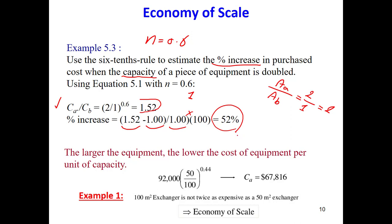The important message of this example is that doubling the capacity does not double the price — it only increases it by about 50 percent. This is because cost and capacity have an exponential relationship, not a linear one. In general, the larger the equipment, the lower the cost per unit of capacity.